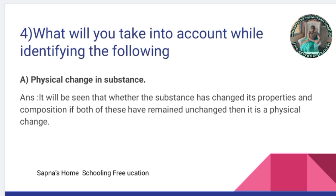What will you take into account while identifying the following? A: a physical change in a substance. It will be seen whether the substance has changed its properties and composition. If the properties and composition remain unchanged, then it is a physical change. If the composition has changed, then it is a chemical change.